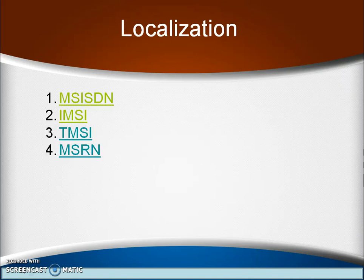We know that one fundamental feature of the GSM network is it locates the user automatically and worldwide. The GSM always knows where its user is currently located. Also, the user's mobile number is used and uniquely identifies him worldwide. To locate a mobile station and to address the mobile station, several numbers are required.